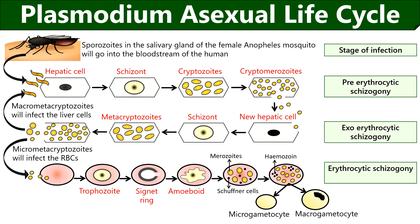The merozoites in the bloodstream may either infect new RBCs or they may differentiate into gametocytes, namely microgametocyte and macrogametocyte. The gametocytes remain in the bloodstream of an infected person. We will end this video by discussing the sexual life cycle of Plasmodium.